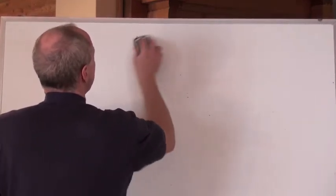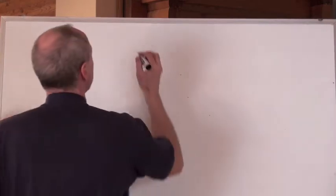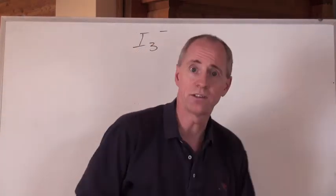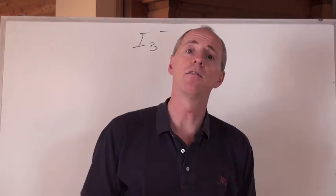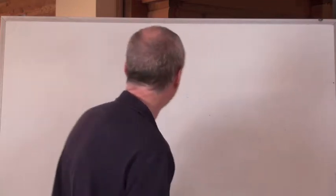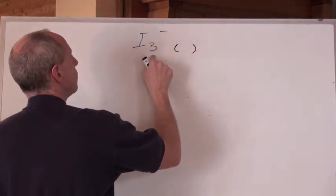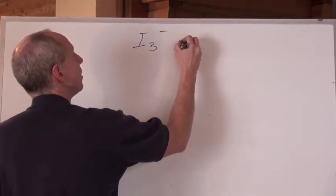Now, that's PCl5. So, how about this one right here? This is a good one to actually look at. I3 negative is also an exception in terms of the way we make a Lewis diagram out of it. So you look at that and you go, well, hang on,